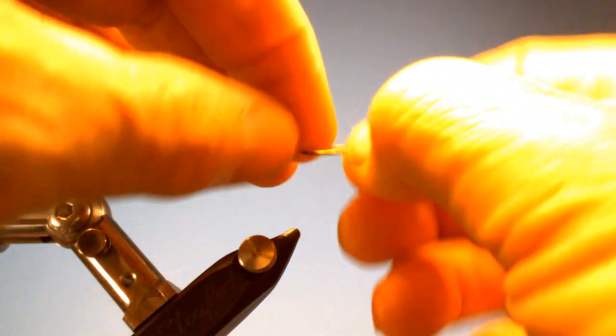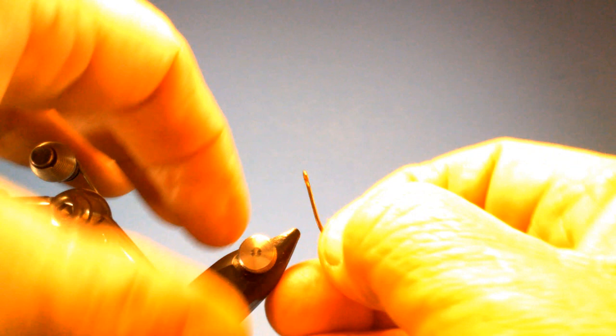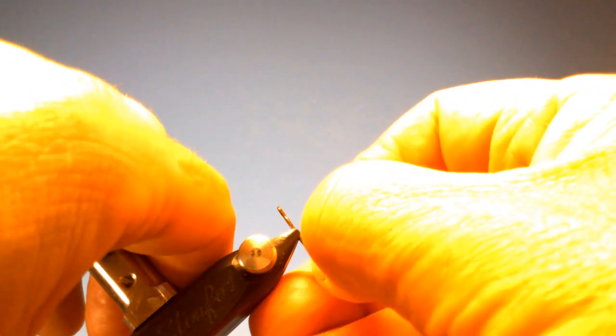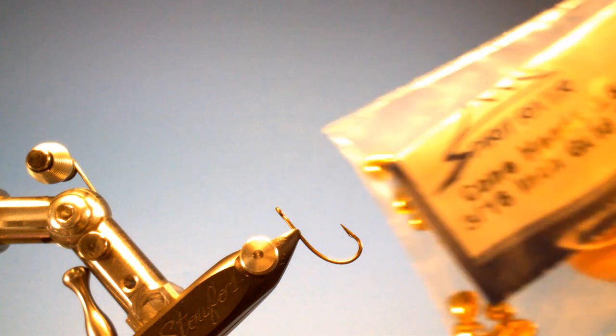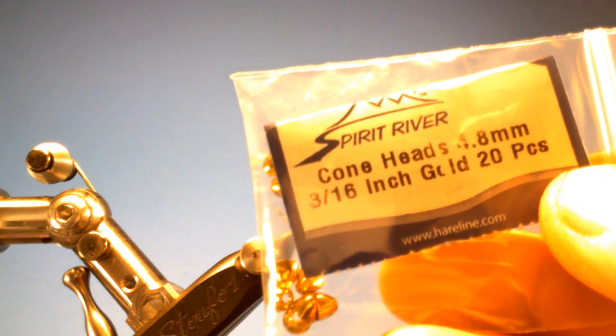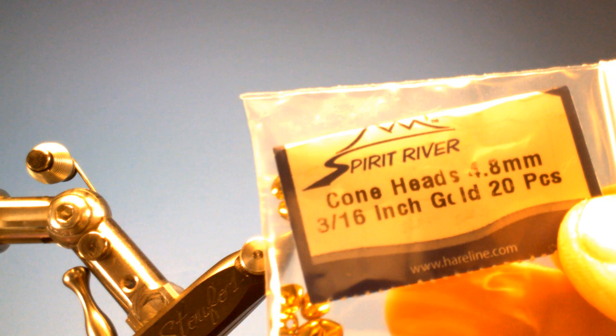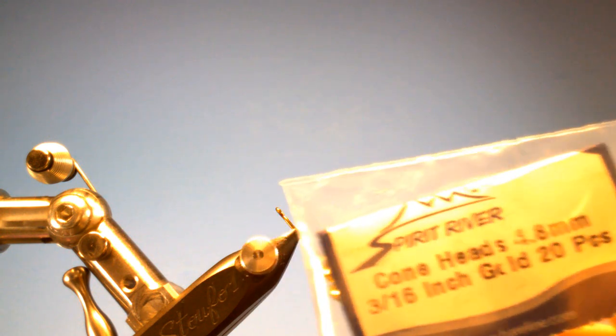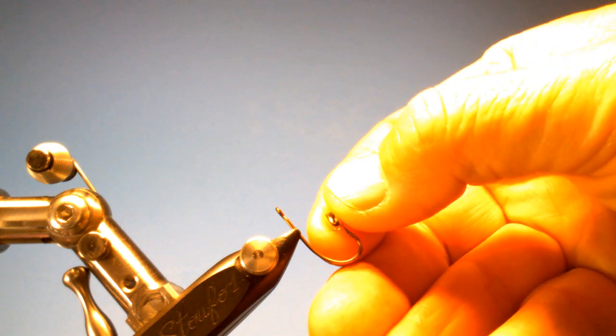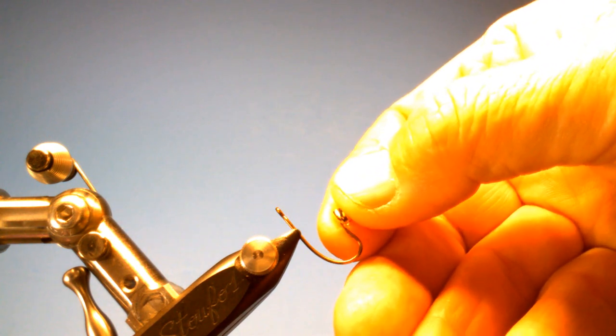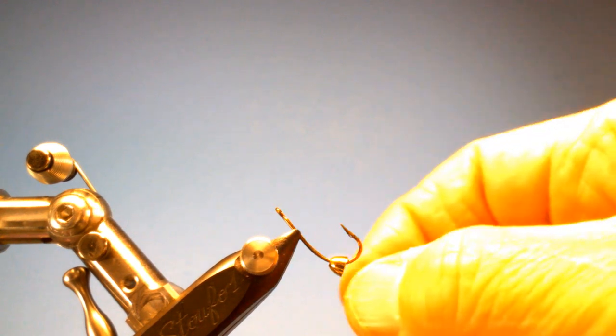I'm going to go ahead and place this this way and show you how the head goes on. And material we're going to use for the head is some gold cone heads, 4.8 millimeters or 3 sixteenths. It's like a medium in gold. And the first one we'll put on, because you're going to need two of them, is the normal way.